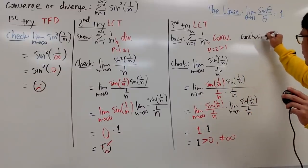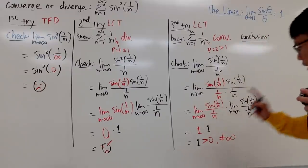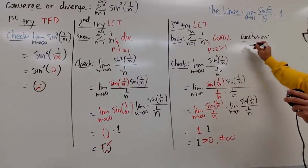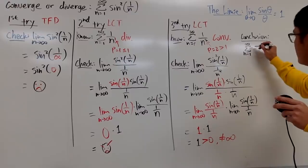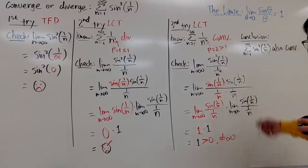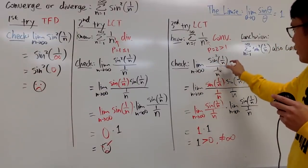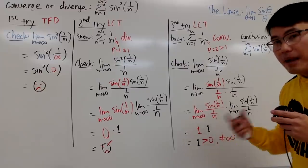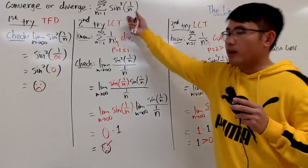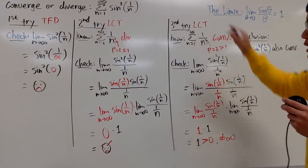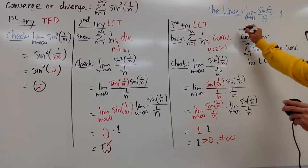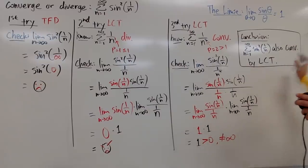This 1 gives us a happy face — we can draw a legitimate conclusion. Since the limit equals 1, which is greater than 0 and finite, the original series as n goes from 1 to infinity of sine squared of 1 over n also converges. By the limit comparison test, since this and that are pretty much the same size, and the comparison series converges, the original series also converges.